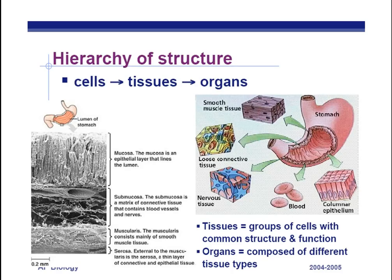Now we're getting into smaller levels of organization. Don't confuse levels of organization with levels of classification. Levels of classification are kingdom, phylum, class, order, family, genus, species. We're talking about levels of organization — how living things are organized.